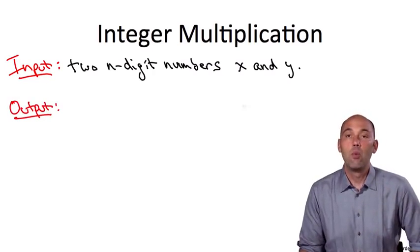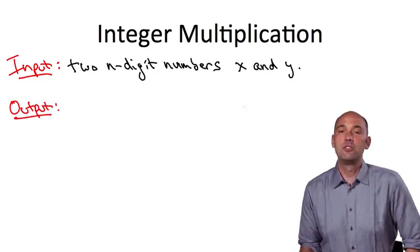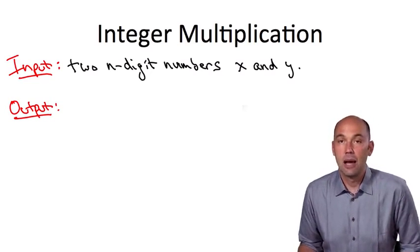We also need to explain what is the desired output. In this simple problem, it's simply the product x times y.